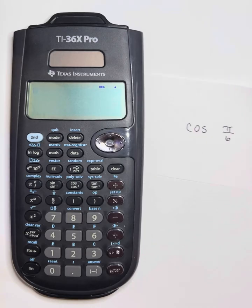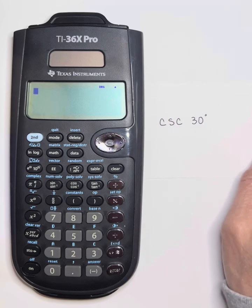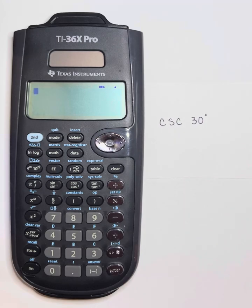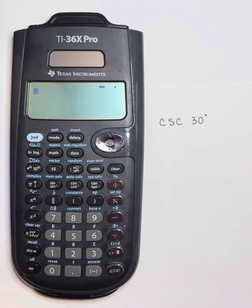Now let's look at something different. Here I have the cosecant of 30 degrees. The trig functions available on the calculator are sine, cosine, and tangent — we don't have a button for cosecant.